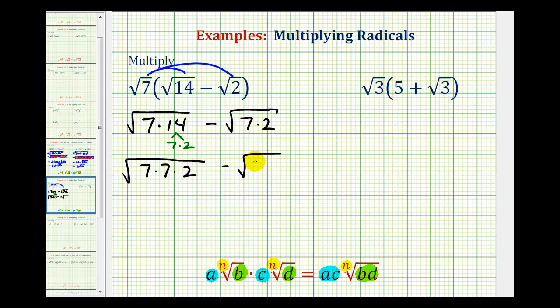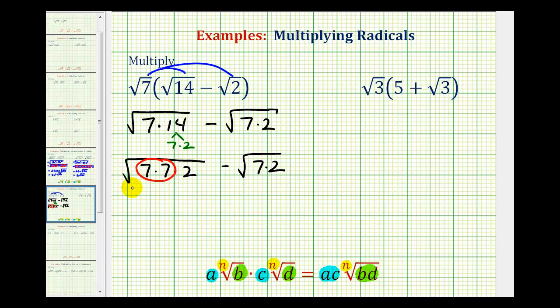Notice that seven and two are both prime. So now we can see that this has a perfect square factor, which would be 49. So this simplifies to seven square root two. And we can see this does not have any perfect square factors, so we have minus square root 14.